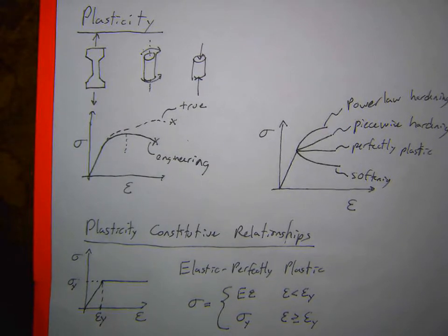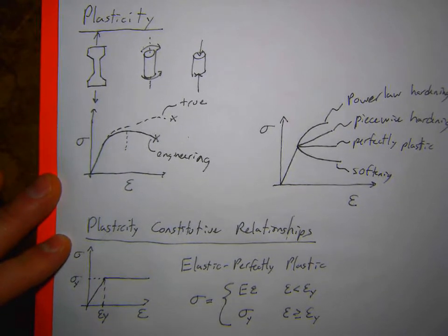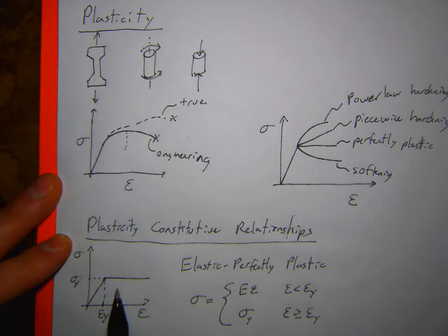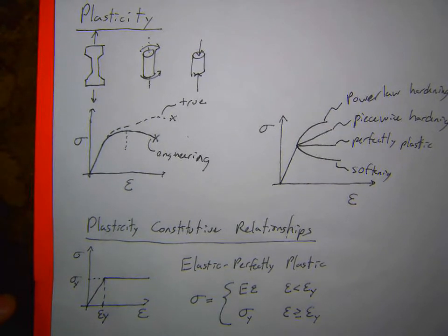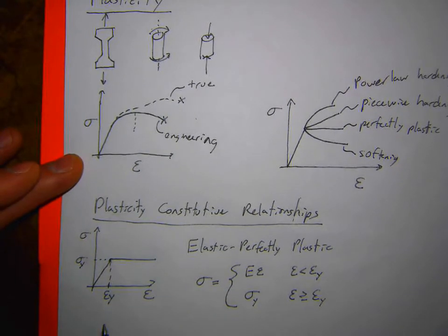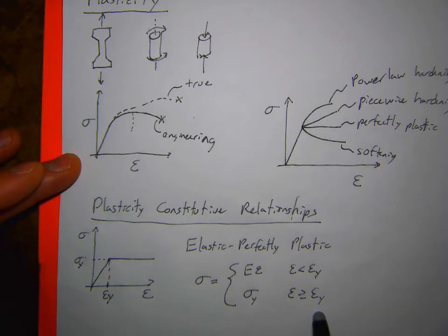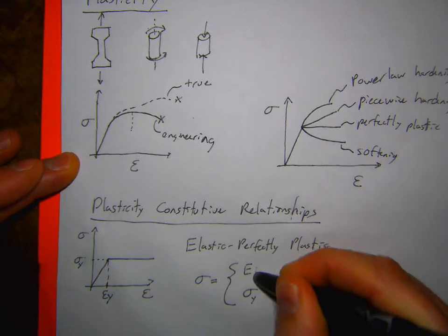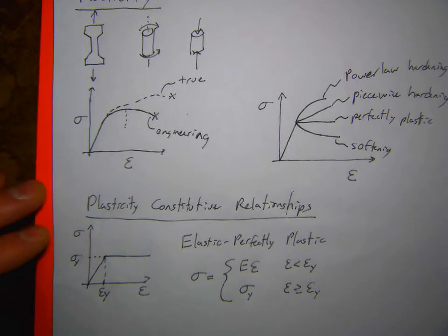Question: Would it be more realistic to use true strength instead of engineering? Yes, but here it doesn't matter too much because there's no hardening or softening — it just stays at a constant. We're also ignoring geometric effects; this is just the constitutive relationship for what's happening in the material. The epsilon symbol next to E is just strain, giving that linear elastic relationship, which is what you would get out of a uniaxial tension test.